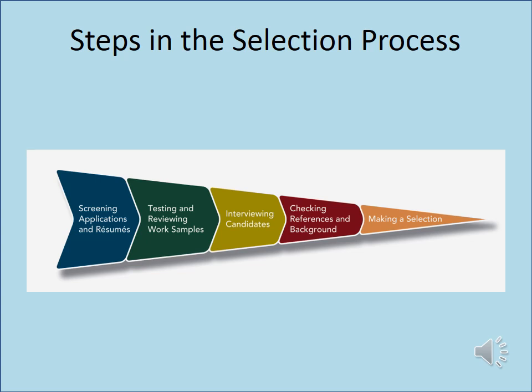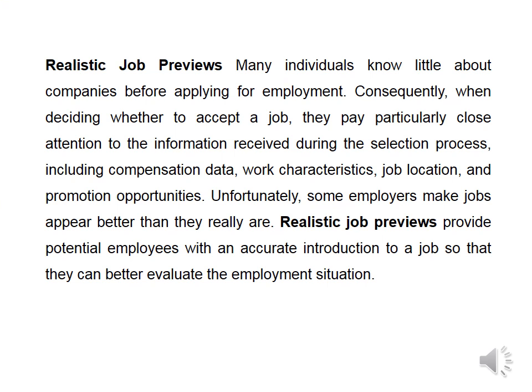The steps and stages in the selection process include screening and filtering applications and CVs, testing, interviewing, checking background and references, medical examination, honesty testing, and making a selection decision. One of the main selection stages that the organization cannot neglect is the realistic job review, which is to provide potential employees with an accurate introduction about the job, its circumstances, its schedule, and its extreme conditions in order to enable potential employees to make self-filtration before accepting the job.